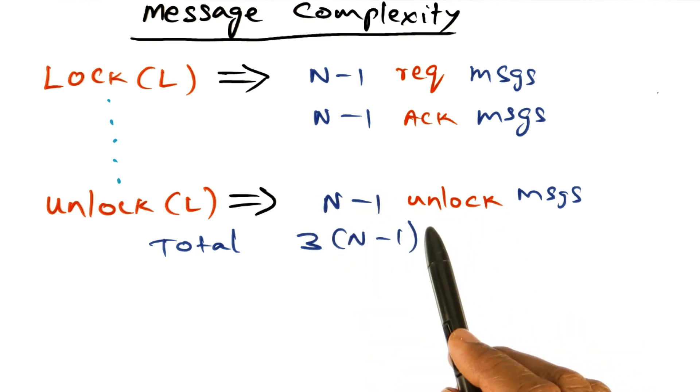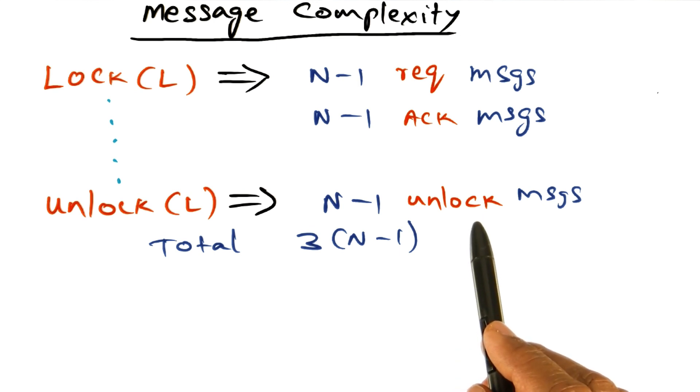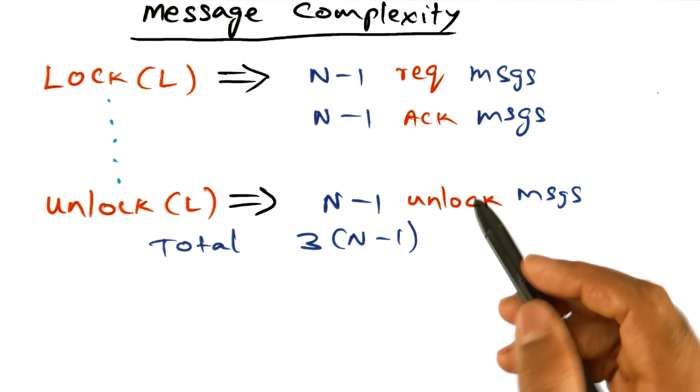The interesting thing that you notice is there is no acknowledgement for the unlock message, because of the assumption that we make that messages are never lost. And therefore, when I send an unlock message, I know that everybody will get it. Everybody will remove my request from the respective queues and go on with life. And therefore, there is no acknowledgement for that.